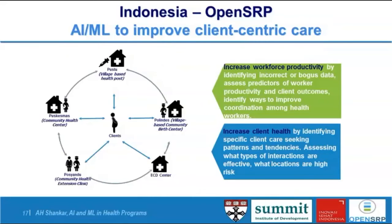To finish: AI and machine learning can have very important applications to increase workforce productivity. Identifying false or bogus data is very useful. You can improve worker productivity, as I've shown. There are also many applications to improve client health itself — identifying specific client health-seeking behavior, which clients are likely to come back for a health visit, which clients are likely to be compliant with their treatments, and what types of interactions or counseling sessions might be effective. We really have to define what the use case is. There's certainly a lot of potential, and we'll discuss more in the Q&A.